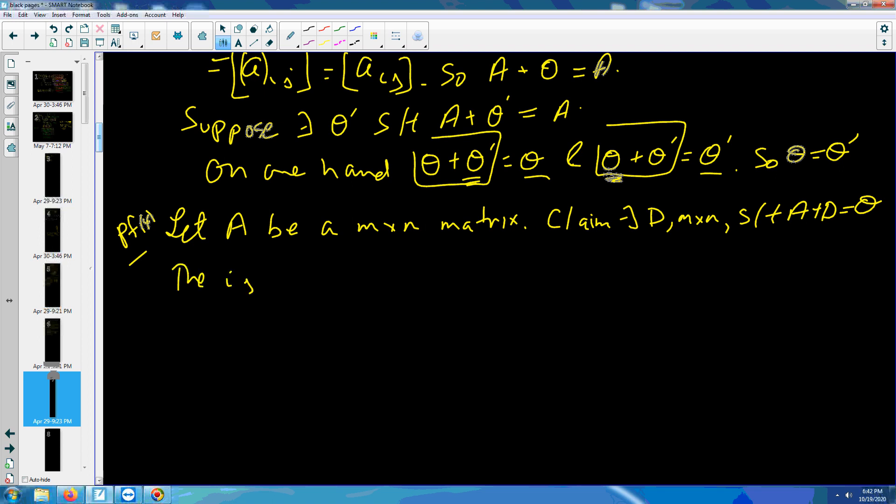Now, I'm going to define D as follows. The ij element of D is negative one times the ij element of A. That is, if the ij element of A is seven, then the ij element of D will be negative seven. And if the ij element of A is negative five, then the ij element of D will be negative negative five, or positive five.